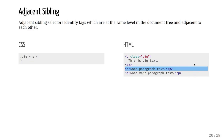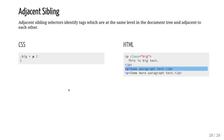You can also identify tags as siblings. The adjacent sibling selector targets a tag when it is at the same level in the hierarchy and adjacent to another tag. For example, a selector looking for a paragraph that is an adjacent sibling to a tag with class 'big' will select the paragraph immediately following that element.